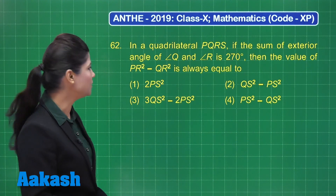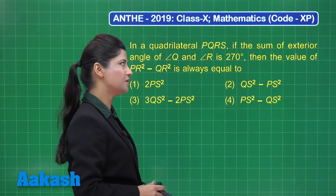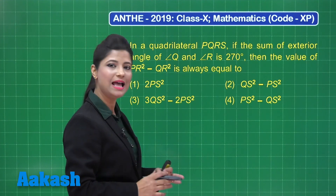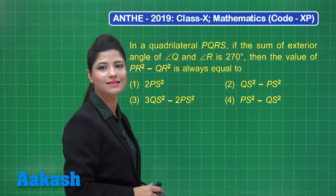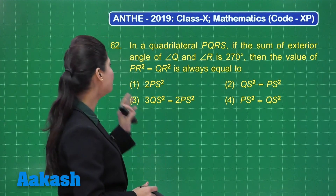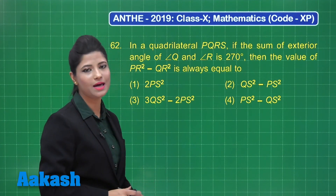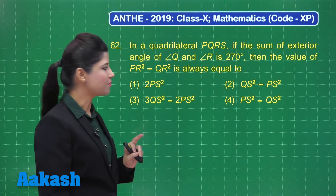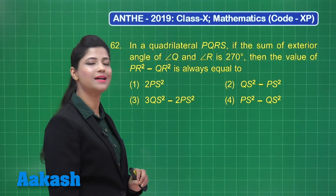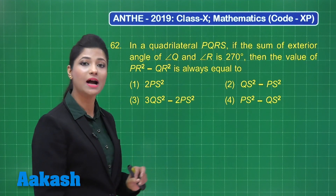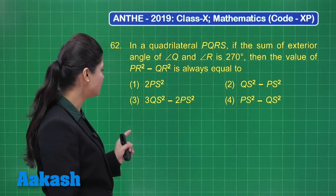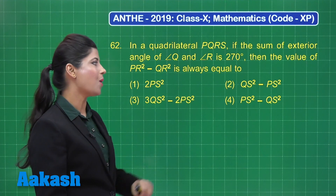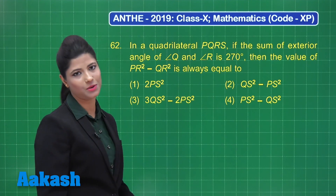Question number 62 states: in a quadrilateral PQRS, if the sum of exterior angles of angle Q and angle R is 270 degrees, then the value of PR squared minus QR squared is always equal to one of these options: twice PS squared; QS squared minus PS squared; thrice QS squared minus twice PS squared; or PS squared minus QS squared.